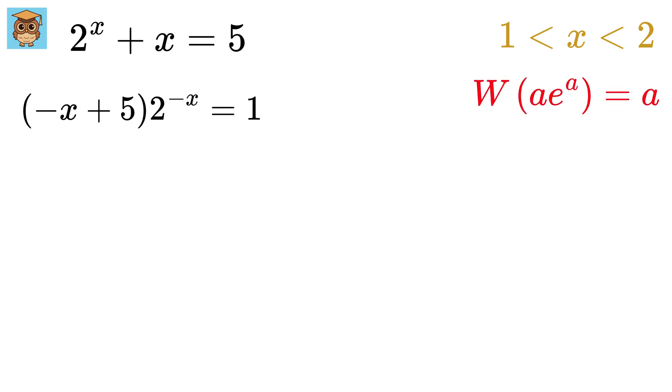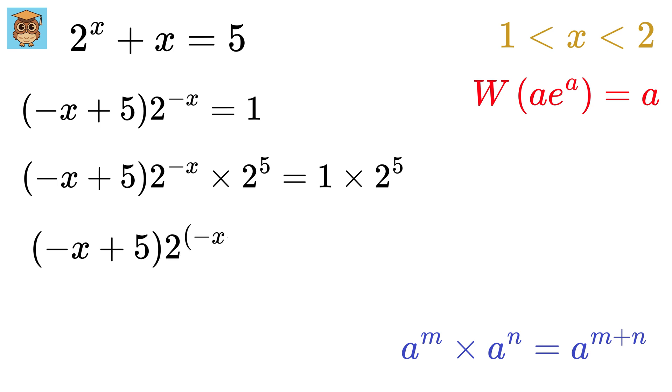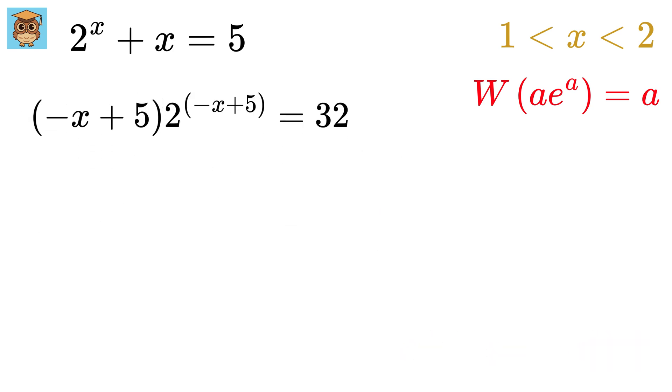So now let us try to use this W function here on the left side. For that, we will try to create the same power here. For that, multiply both sides by 2 to the power 5. Using this power rule, we get minus x plus 5 times 2 to the minus x plus 5 equals 32. So you can see that we are getting the same type of expression. Now we just have to bring e in here, and then we can use the W function.